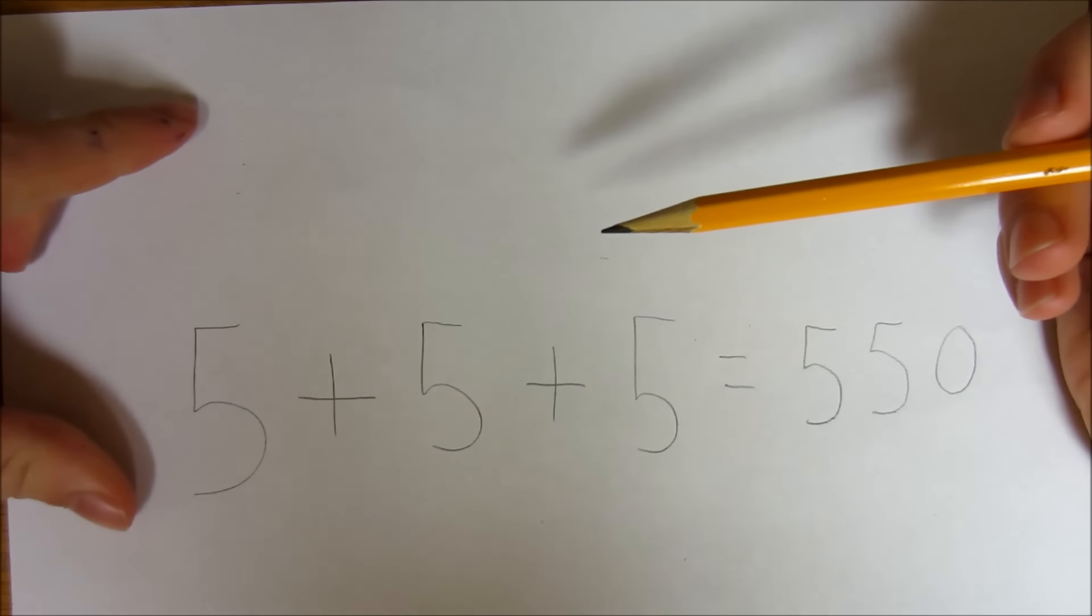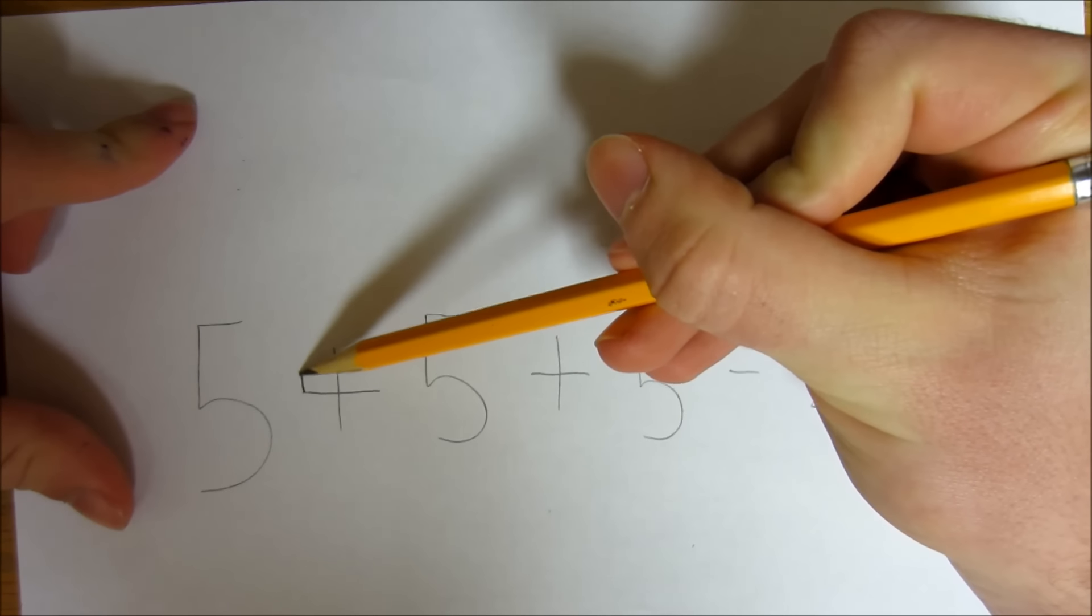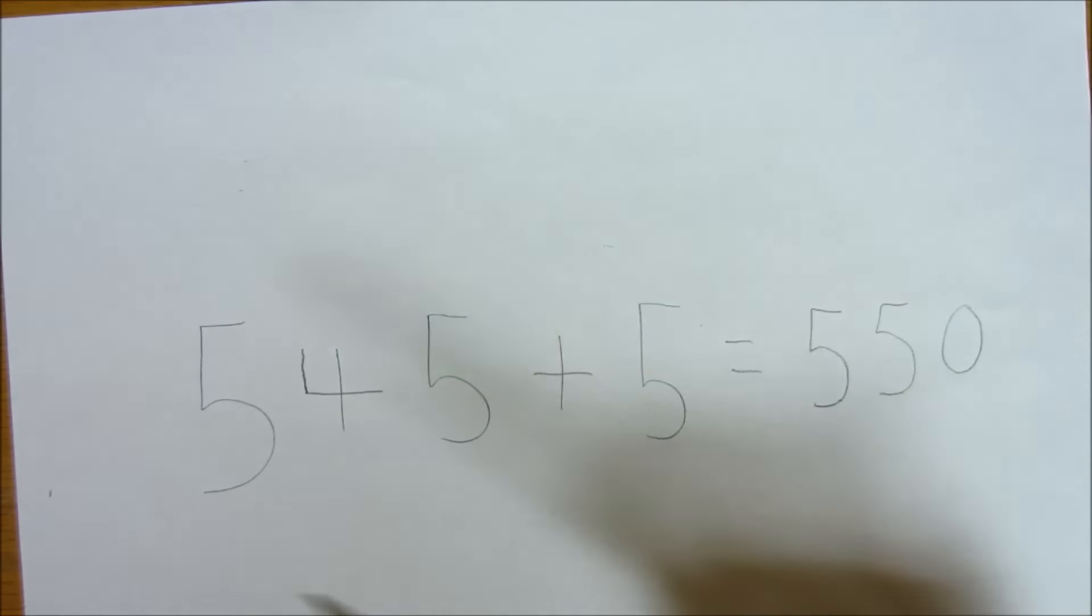Alright, so here's the solution. All you have to do is draw a line on this plus sign to turn it into a four. So that way you have 545 plus 5 equals 550.